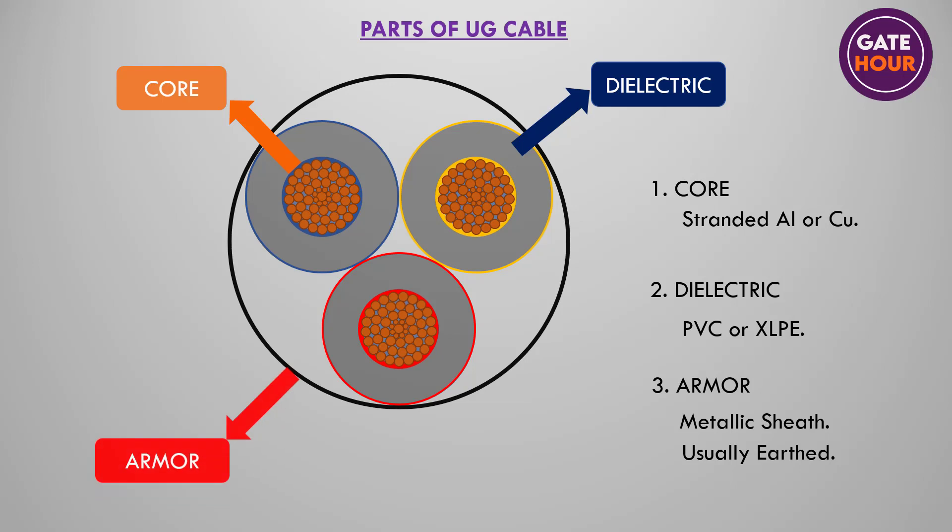The third part is a metallic sheath known as armor, which protects the cable from mechanical damage, fire, and chemical or electrochemical attack. When a cable is laid in site, armoring of the cable is usually earthed for safety and reliability purposes.